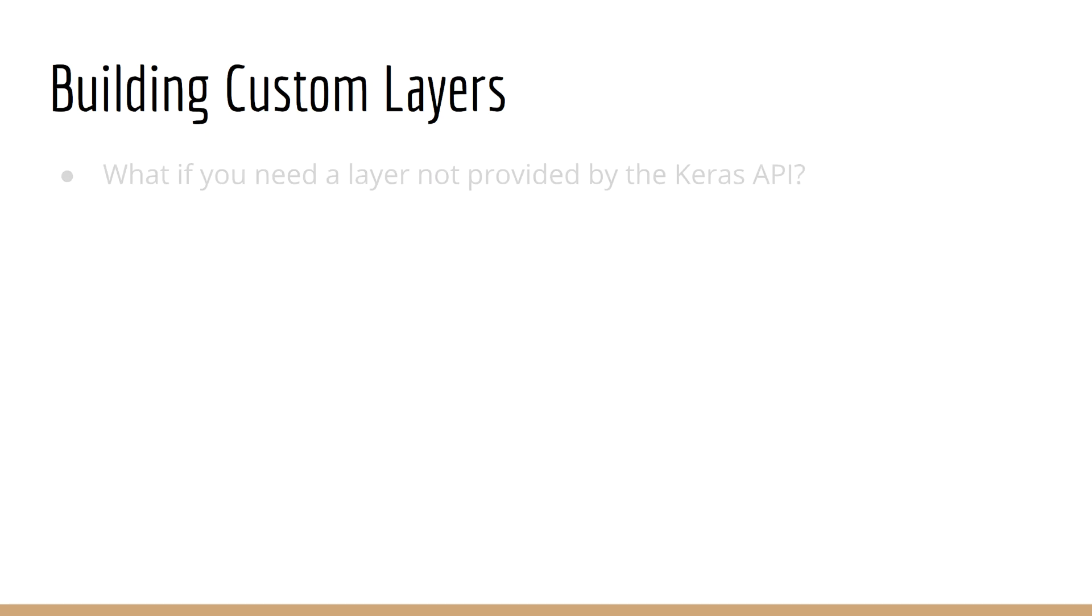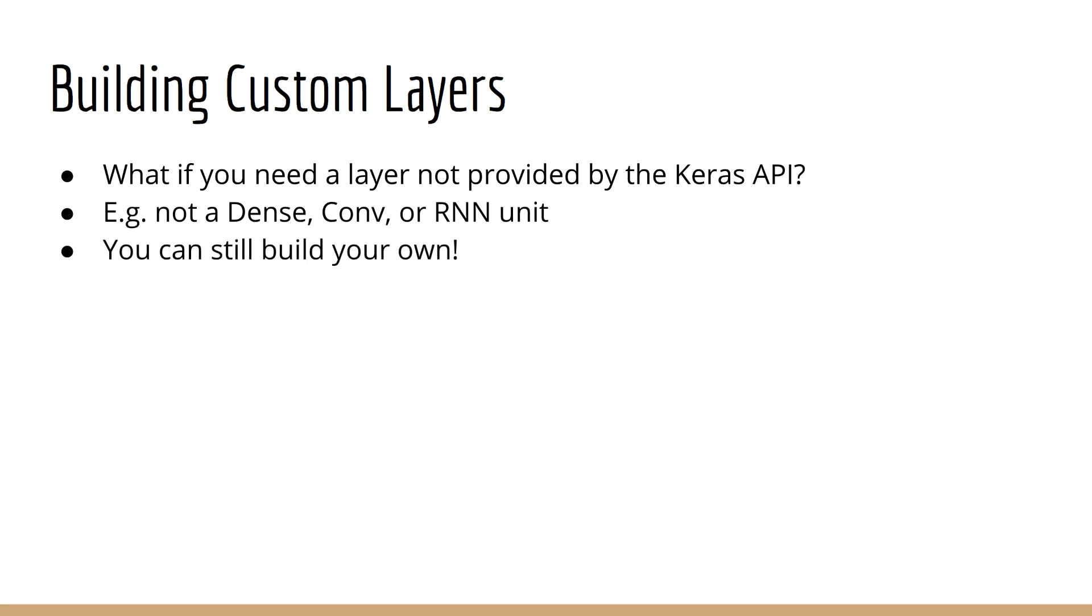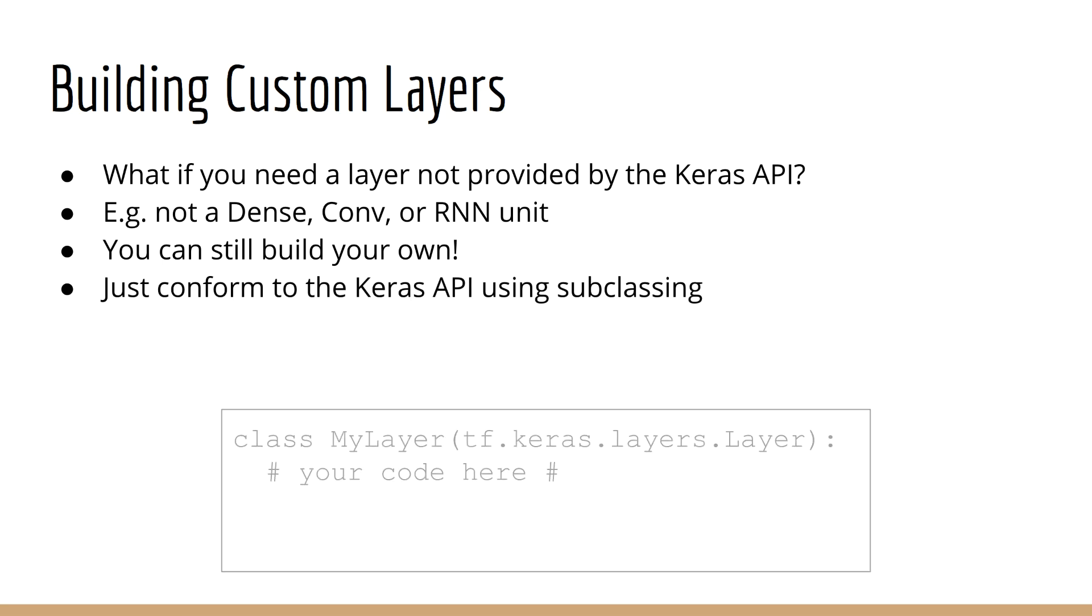As a side note, if you want to build your own custom layer, say it does something that does not fall into the realm of dense convolution or RNN unit, then you can still do that through the Keras API. You would use what is called subclassing. All you need to do is subclass tf.keras.layers.layer, and then define the computation for your layer.